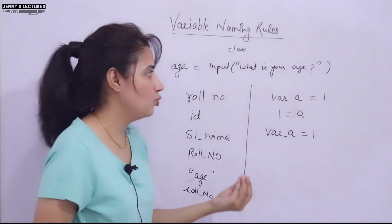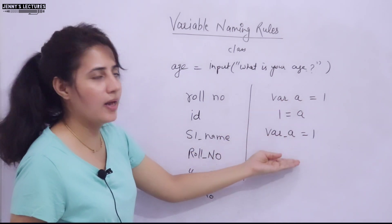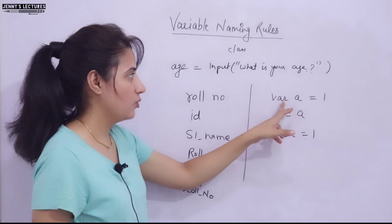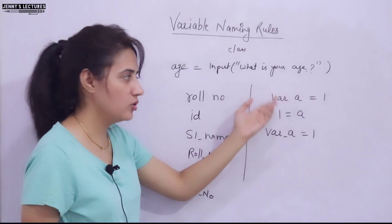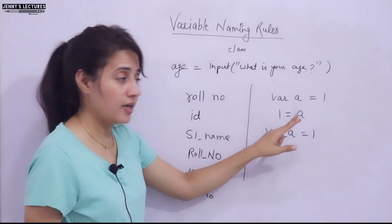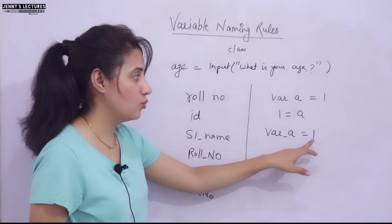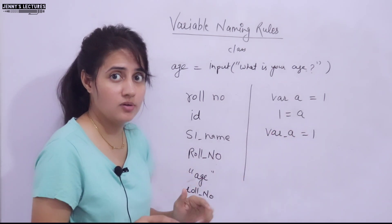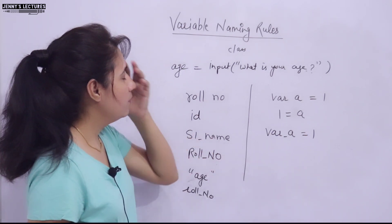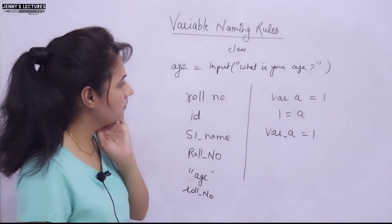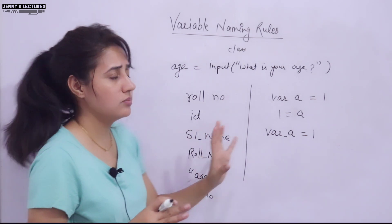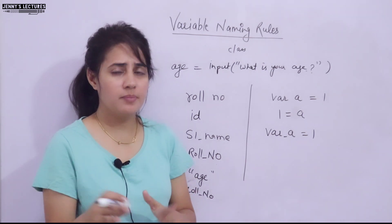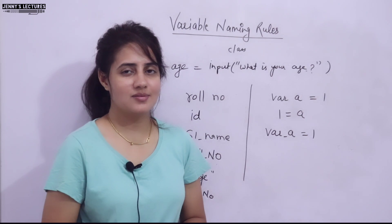There's also an assignment on assignment statements — tell me which is valid and which is invalid: 'a = 1', '1 = a', or '_a = 1'. Let me know in the comments. So now we know the simple rules for naming variables. In the next video, we'll look at data types — primitive data types in Python. Till then, bye bye, take care.